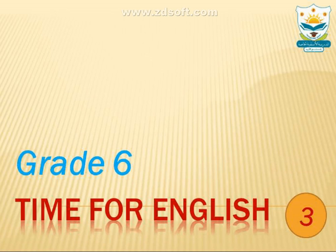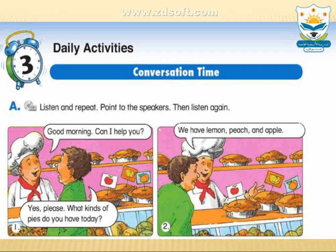Good morning, Grade 6. Today we are going to start Unit 3, Daily Activities. We will start with conversation, and this conversation is at a bakery. A man wants to buy a cherry pie. The bakery is out of cherry. The man wants to take a peach pie because it's not expensive. The baker gets a fresh pie for him.